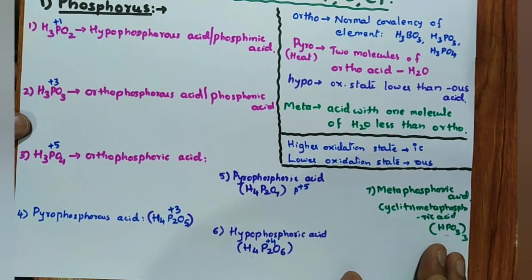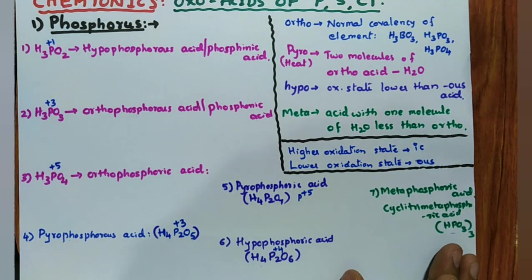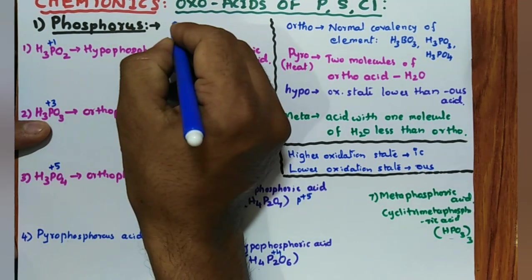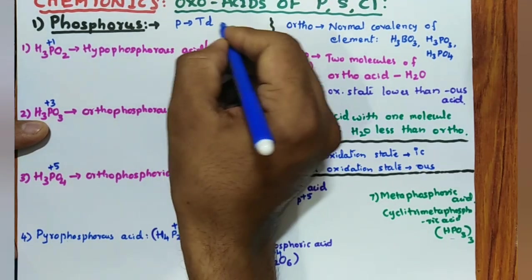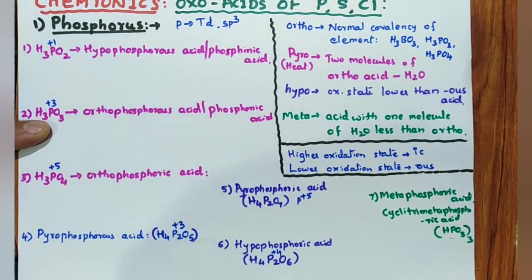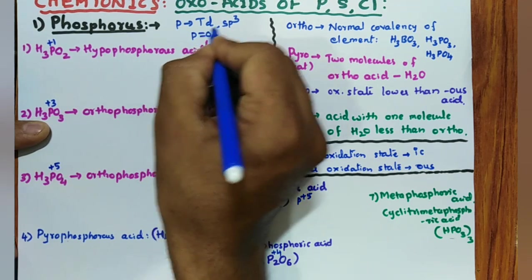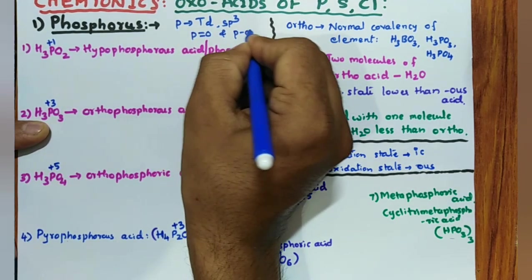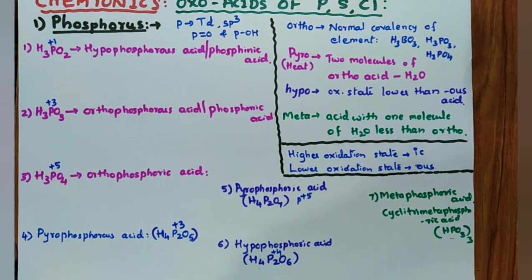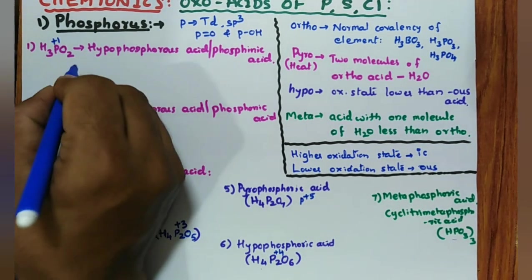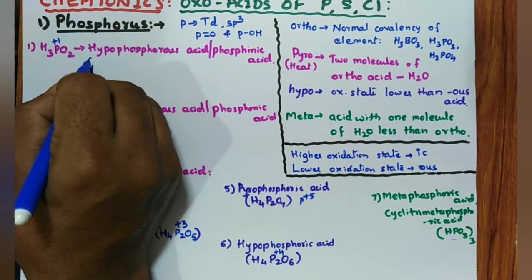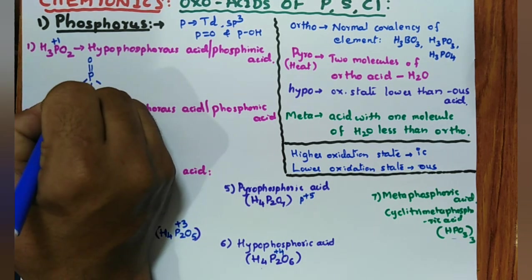In all these cases, what you have to remember is structure — very, very important — basicity of the acid, and reducing nature. All these phosphorus atoms are tetrahedral in nature with SP3 hybridization at the center. Compulsory: one P=O double bond and one P–O–H bond must be present. So for H₃PO₄, tetrahedral with one P=O and one P–O–H compulsory.